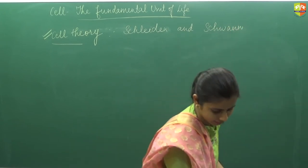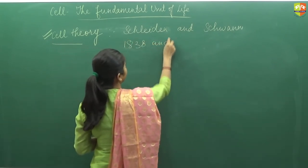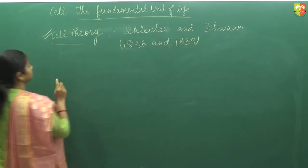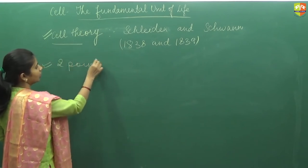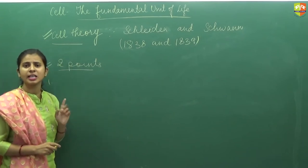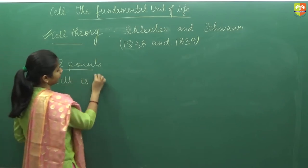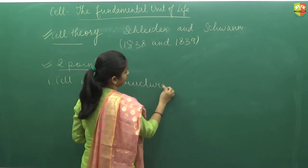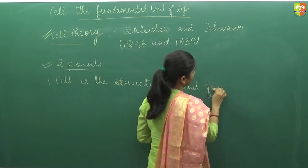First we should write or learn the name of the scientists Schleiden and Schwann. First, remember the year 1838 and 1839. Next, what are the two points of this theory? The first point is the basic point that you are studying in the starting of the chapter, that cell is the structural and functional unit of life.